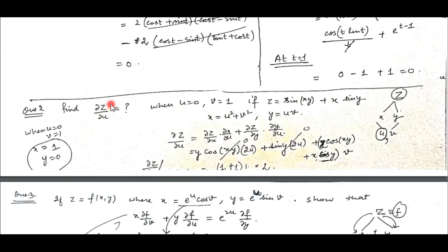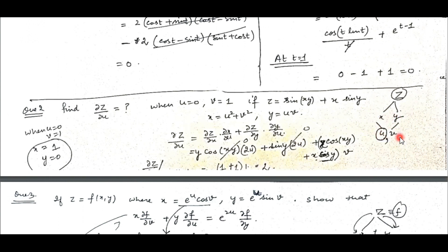In question number 2, you have to find out the partial derivative of z with respect to u at a given point, where z is a function of x and y, and further x and y are functions of two variables u and v. Again, we apply the chain rule: take the derivative of z with respect to x then with respect to u, plus take its derivative with respect to y then the derivative of y with respect to u. Since z is a function of two variables and x, y are functions of two variables, all derivatives are partial. Substitute the values, simplify, and you will get the value of the derivative of z with respect to u at the given point.